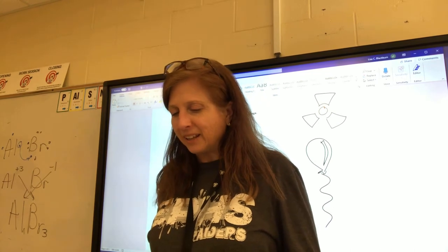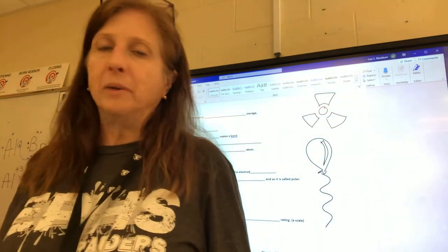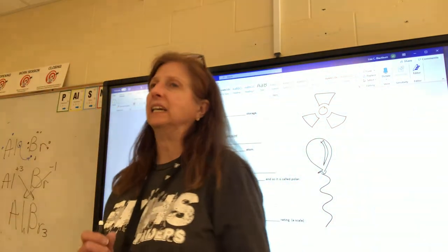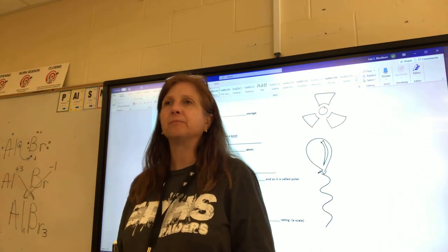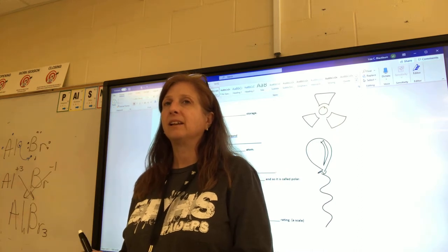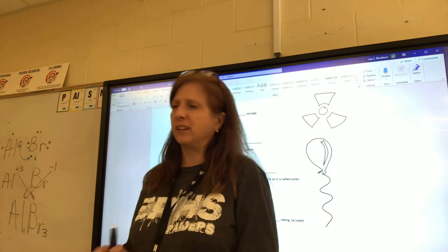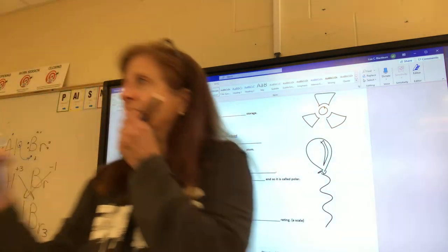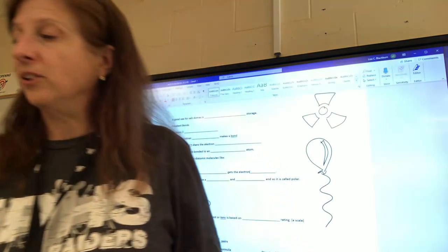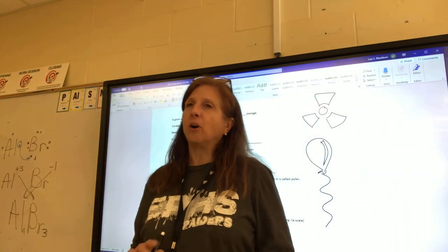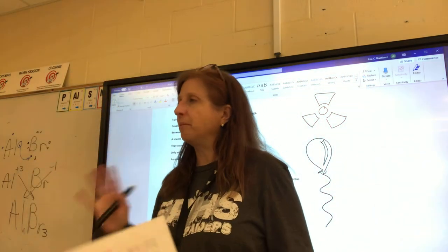Let's talk about ionic bonds. What kind of elements are ionic bonds between? What two kinds of elements make up an ionic bond? A cation and an anion. Cations come from the metal side of the periodic table. So ionic bonds are between a metal and a non-metal — the metal is the cation, the non-metal is the anion.